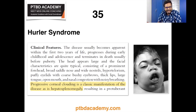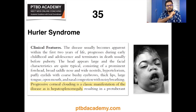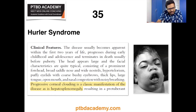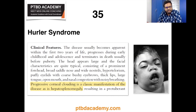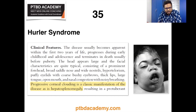Hurler's syndrome, also called mucopolysaccharidosis type I, is a disturbance of mucopolysaccharide metabolism. It is characterized by elevated mucopolysaccharide excretion in urine with excessive intracellular accumulation of chondroitin sulfate B and heparin sulfate. It is inherited as an autosomal recessive trait. The disease usually becomes apparent within the first two years of life, progresses during early childhood, and terminates in death usually before puberty.